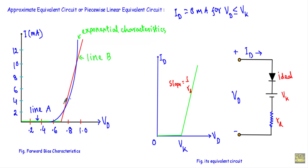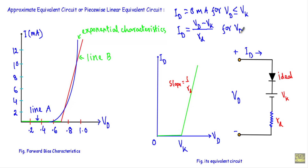Line A represents ID = 0. For line B, I can represent the equation as: ID equals (VD minus knee voltage or built-in potential VK) divided by RD, for VD greater than VK. Here VK is the built-in potential, and RD is the dynamic or forward resistance of the diode, which can be represented by the slope of line B.